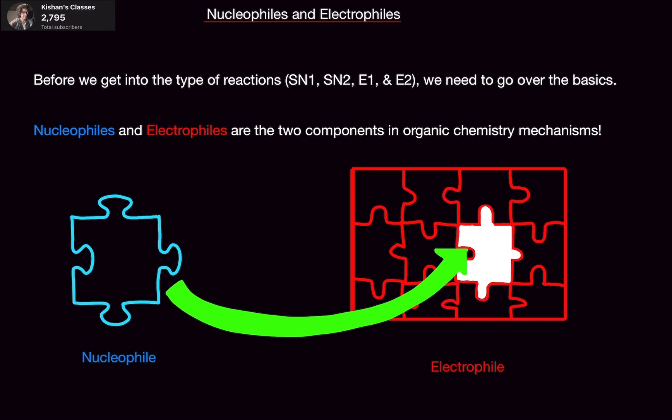The electrophile is basically telling the nucleophile: 'Hey, come on over, I have a space available, come and attack me.' Another way to think about it: imagine military jets dogfighting. One jet fires a missile at the other. The jet firing the missile is the nucleophile, and the jet being attacked — the one that's going to get blown up — is the electrophile. The one doing the attacking is the nucleophile.